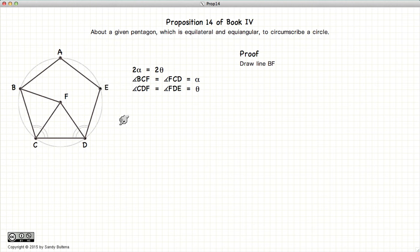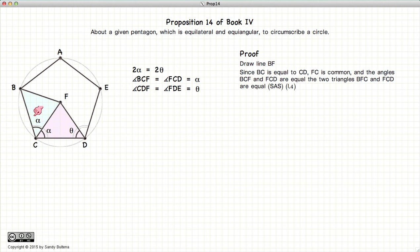So how do we prove that the circle actually passes through all the vertices of the pentagon? Well let's take the point f and draw three lines to b, c and d. Let's look at these two triangles.